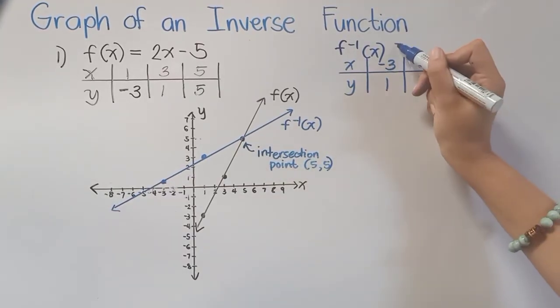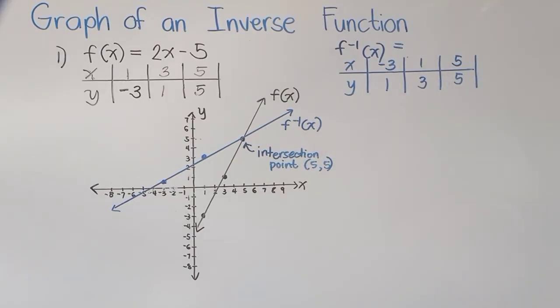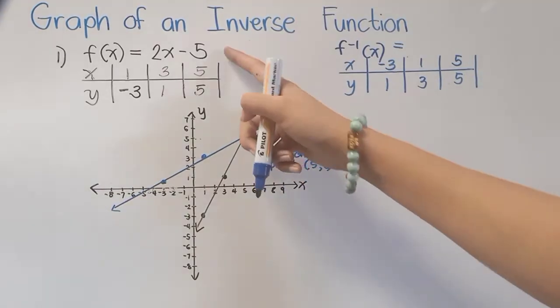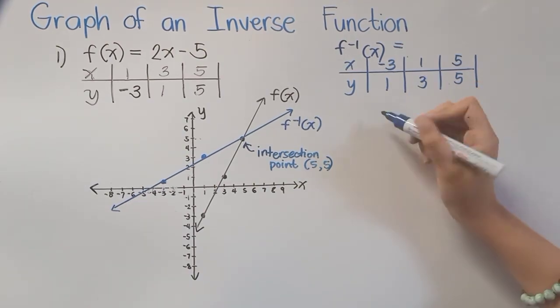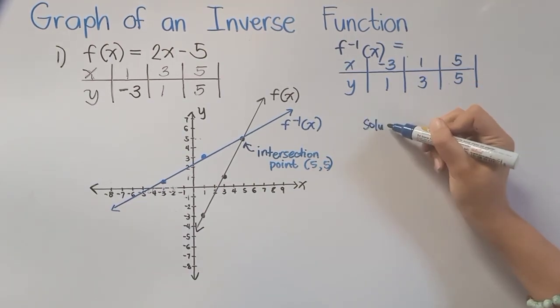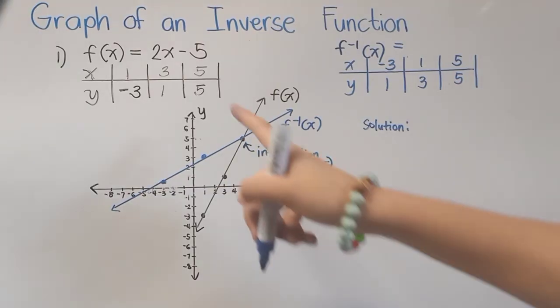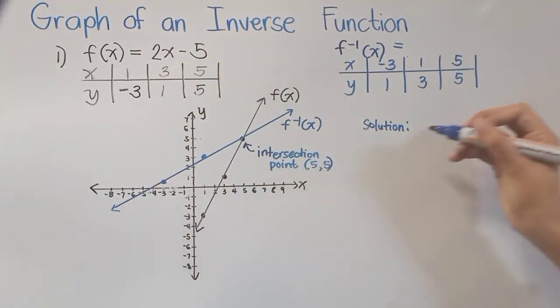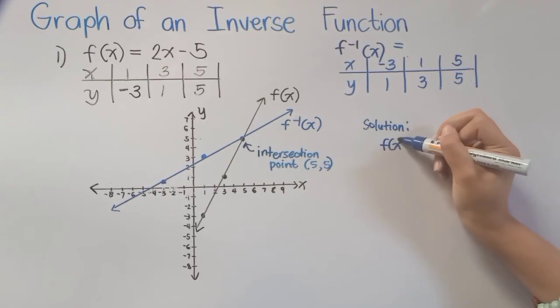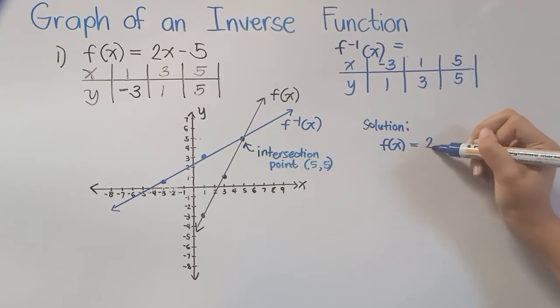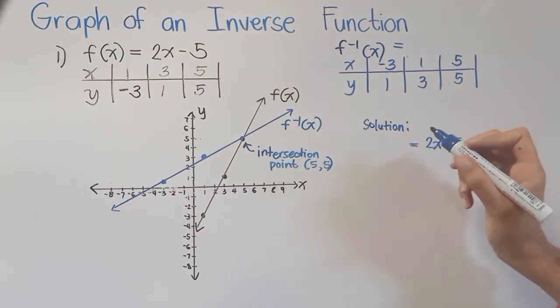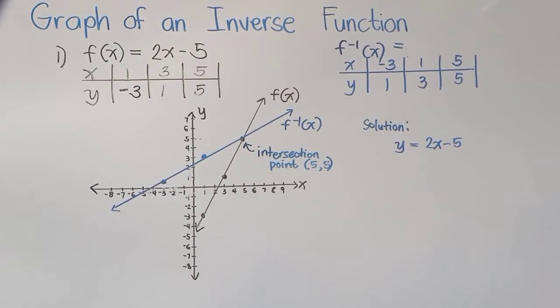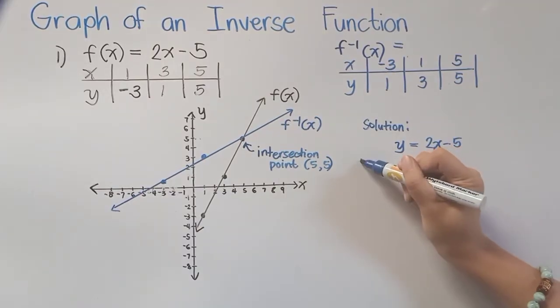As you can see here, we only have the graph of our inverse function, but not the inverse function itself. So to get that, we will have to go back to our given function. So that is f(x) = 2x - 5. Now remember that f(x) can also be written as y. So let's start with our first step.